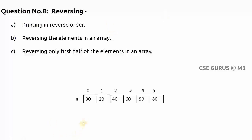What is the difference? Printing in reverse order means you only print the last element first — like 80, 90, 60, 40, 20 — but the original array remains unchanged. Reversing the elements in an array means a[0] should hold the last element (80), a[1] the next (90), and so on. So in question A the array is unchanged, while in question B the array elements are actually rearranged.